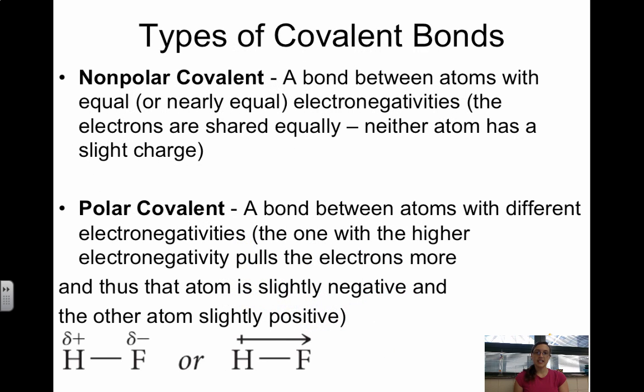So looking at types of covalent bonds. We talked about ionic and covalent bonding in the last video. Now I want to focus on the types of covalent bonds. We can have nonpolar covalent bonds, or we can have polar covalent bonds. A nonpolar covalent bond is a bond between atoms with equal or nearly equal electronegativities.